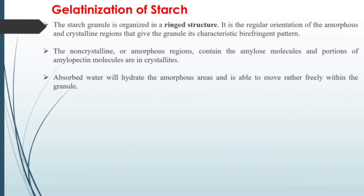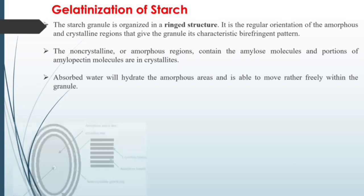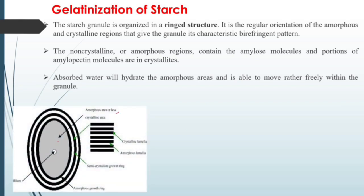Before studying gelatinization, we have to study the starch granule structure. The starch granule structure is organized in a ring structure. You can see in this picture — there is an amorphous area or less crystalline area. These granules have a regular orientation of amorphous and crystalline regions, which gives the granules their characteristics by a fringe pattern: amorphous, crystalline, amorphous, crystalline — oriented in this repeating pattern.